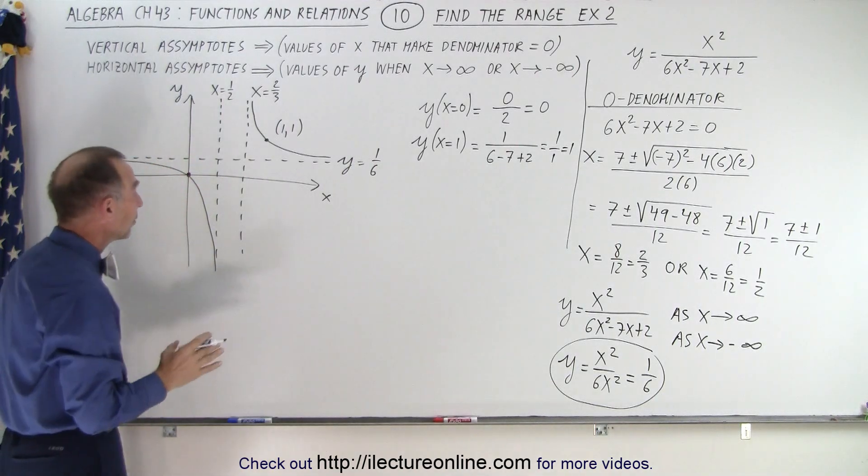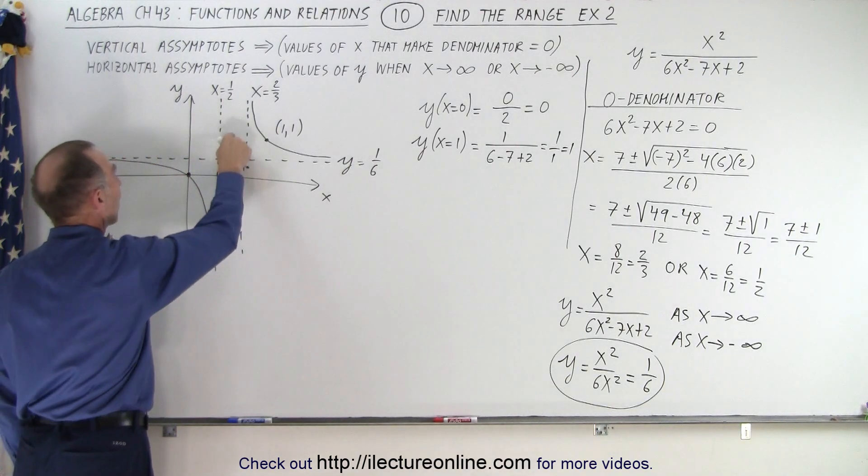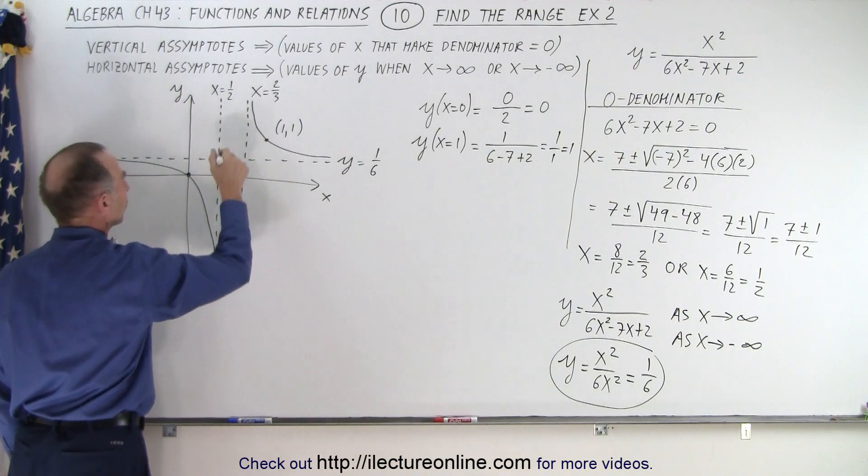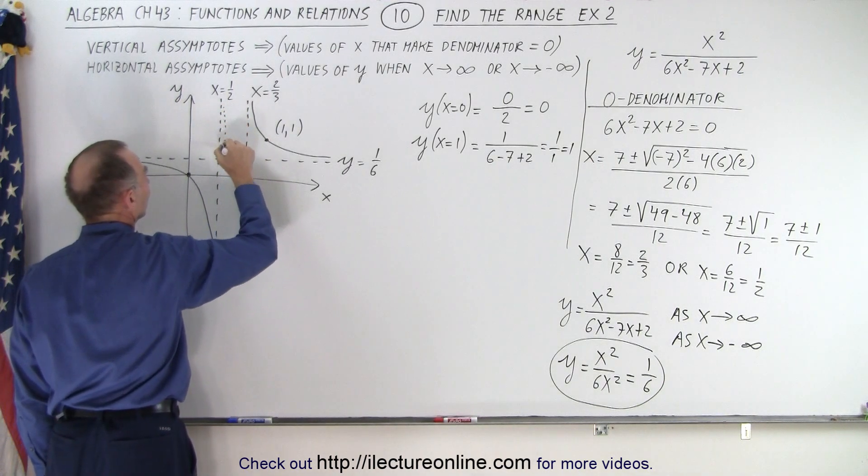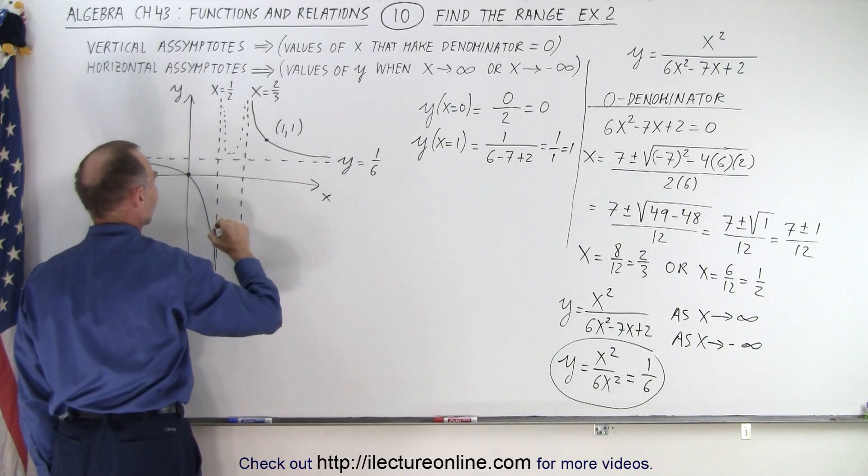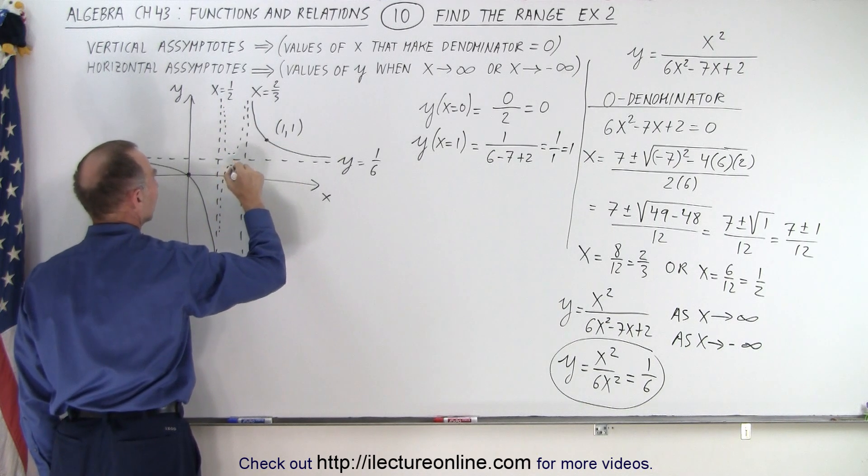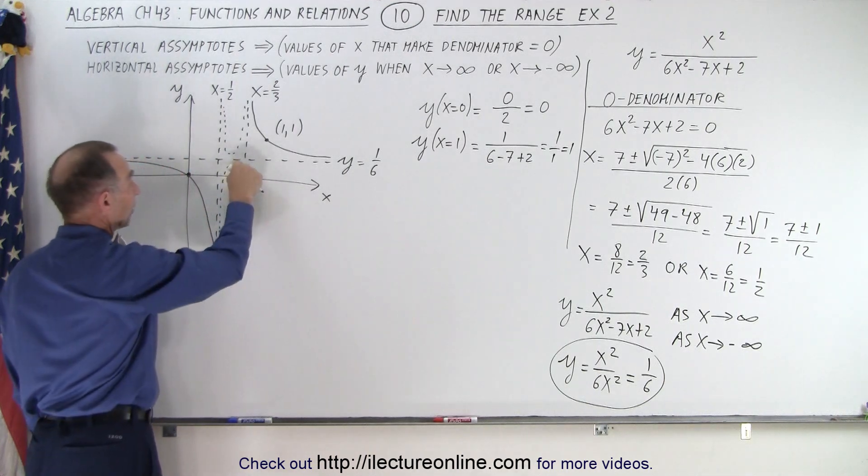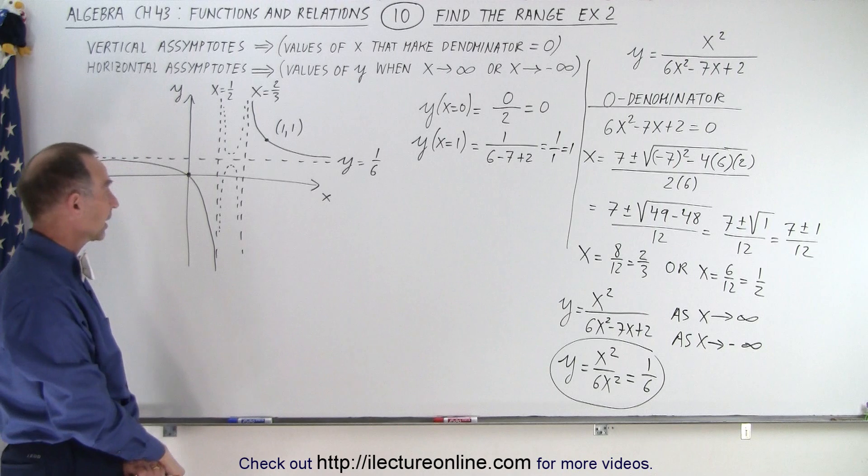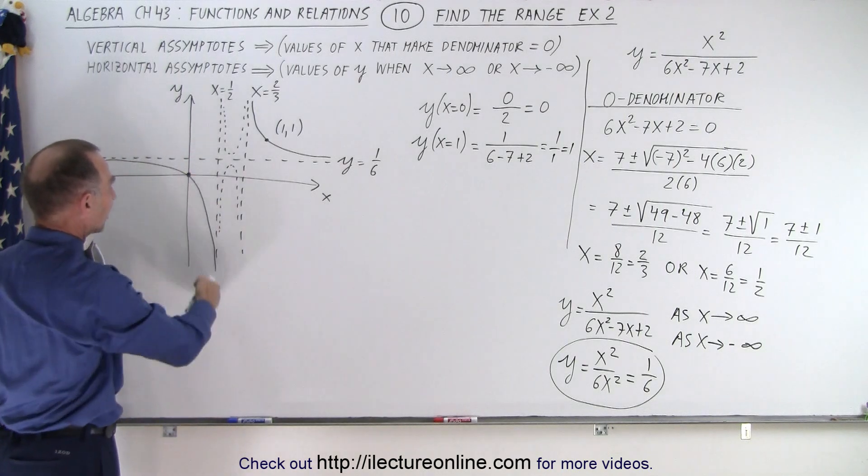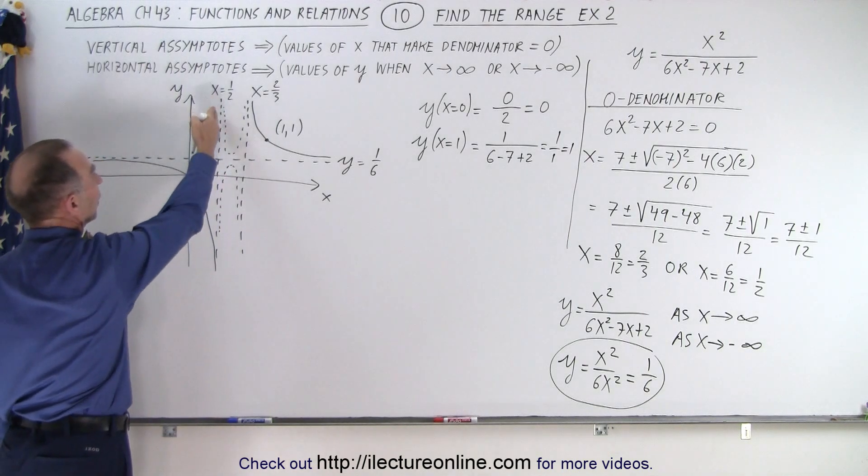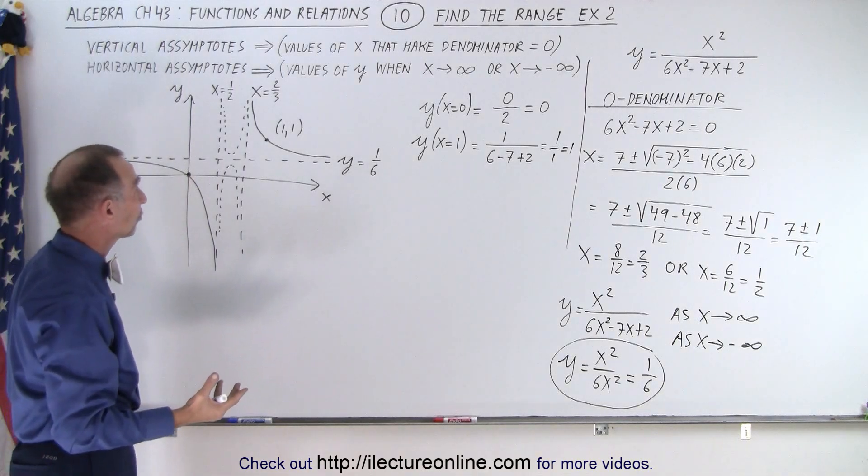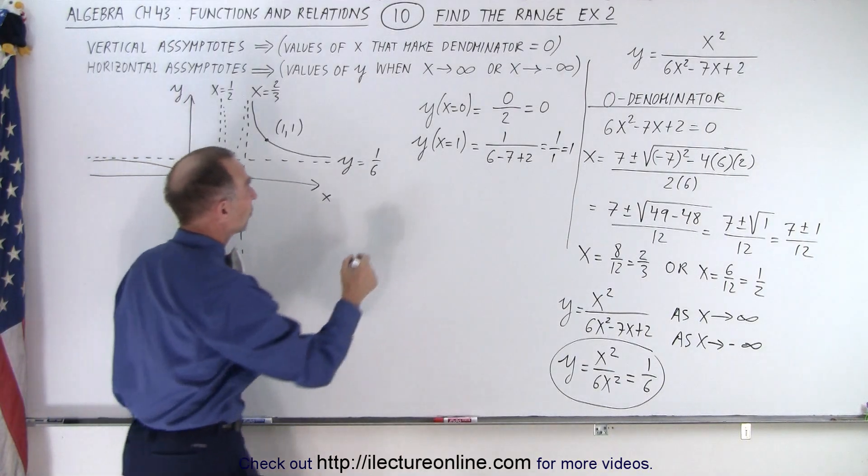Now, the only other thing we need to do is find out if the graph exists in either one of these two places right here. In other words, we might have something that looks like this or we might have something that looks like that. That's the only way you can have a graph in there that doesn't cross these two asymptotes and the third asymptote right there. So we need to pick a value for x in between these two, between 1 half and 2 thirds. So let's try x equals 0.6.